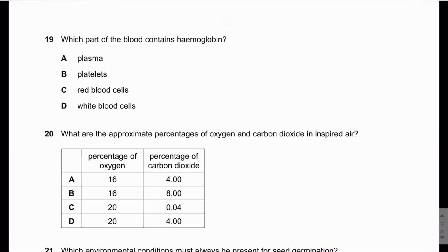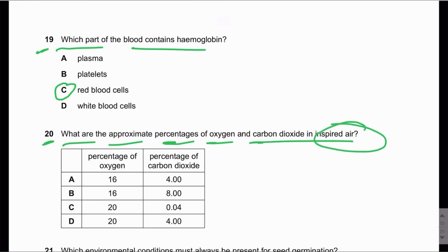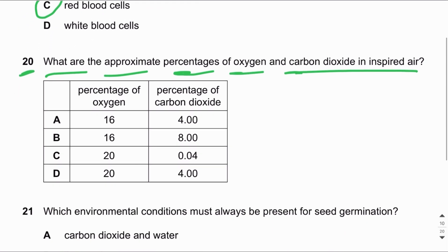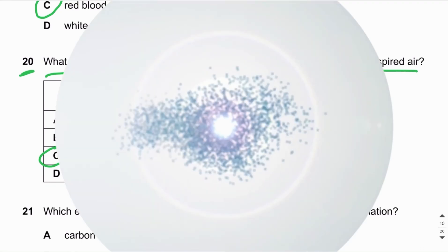MCQ number nineteen: Which part of the blood contains haemoglobin? Haemoglobin is present only inside red blood cells, because red blood cells have the function of transporting oxygen and haemoglobin binds to oxygen. MCQ number twenty: What are the approximate percentages of oxygen and carbon dioxide in inspired air? Inspired air is the air we breathe in, which contains approximately 21% oxygen and 0.04% carbon dioxide.